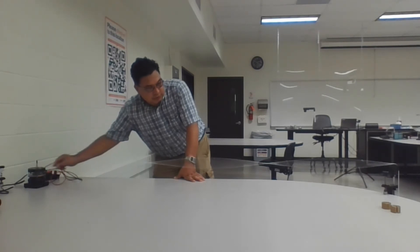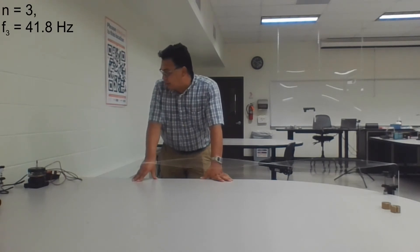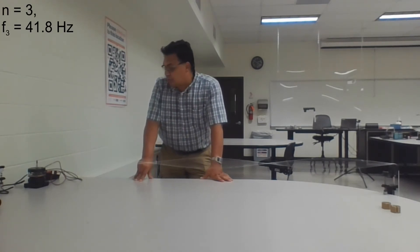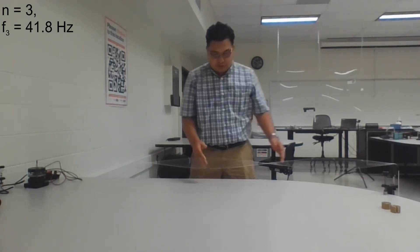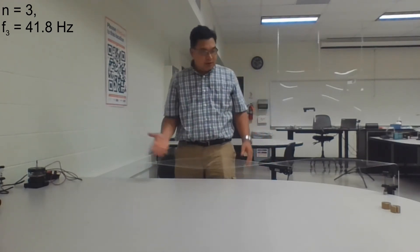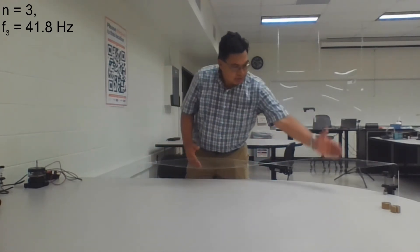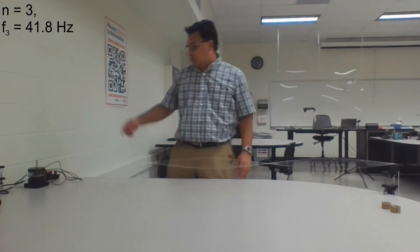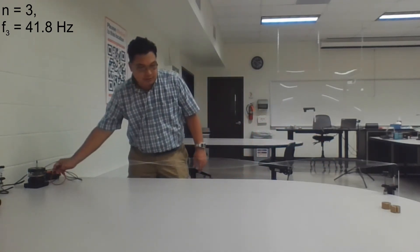Let's go to a higher mode. This must be the third harmonic, occurring at a frequency of 41.8 hertz — note that down. The third harmonic has three anti-nodes and four nodes.